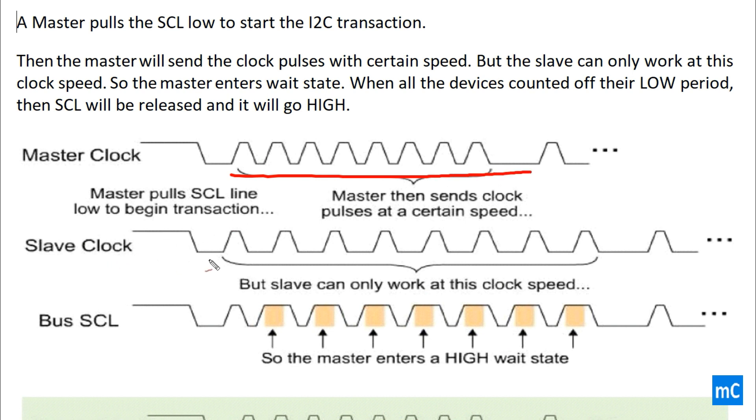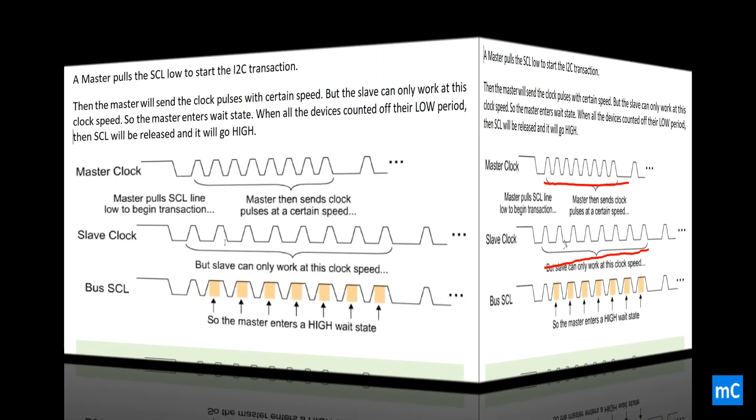This is the slave clock. You can see the difference from the master clock to slave clock. The timing is different. The master operates on higher clock speed and the slave operates on lower clock speed.